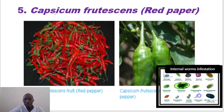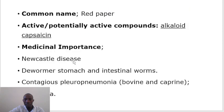The other common plant that is used is Red Pepper, which is Capsicum frutescens. It's used in treatment of internal worm infestations. It's also used in treatment of Newcastle disease within poultry birds, and it's also used in diarrhea and contagious pneumonia. The active compound is an alkaloid called Capsaicin.